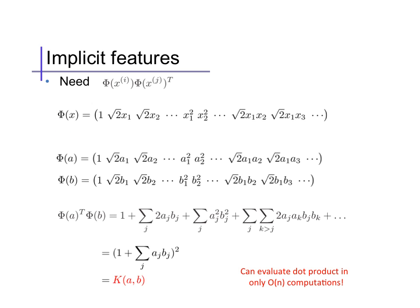So, for example, for quadratic features, phi of a and phi of b have O of n squared features, and computing their dot product takes O of n squared time, but computing it this way instead takes only O of n computations.